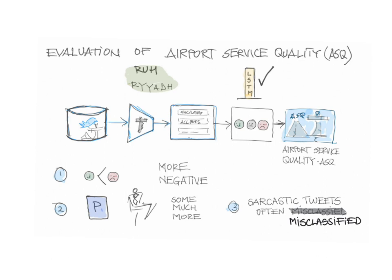Using the better performing algorithm, LSTM, I want to highlight three findings. First, for Riyadh there is a much larger number of negative tweets compared to positive tweets. Second, there are some areas, such as parking and waiting time, which are much more frequent than others. And third, sarcastic tweets are often the ones misclassified — something similar to previous research.